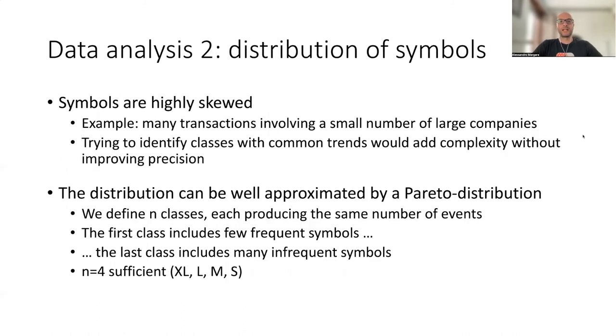Second, we derive a distribution for symbols. Symbols denote, for instance, a specific index, like the Nasdaq, Dow Jones, or a specific company, Microsoft, Apple, whatever. As you can imagine, symbols are highly skewed. For instance, many transactions involve a small number of very large companies, as you can imagine. We immediately noticed that trying to identify classes with common trends would be practically infeasible. It would add a lot of complexity to the model without really improving on precision. So we tried to fit the curve of symbol distributions, and we found that the distribution can be well approximated by a Pareto distribution.